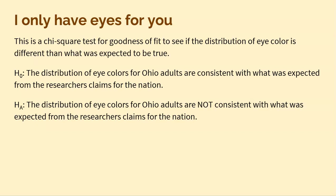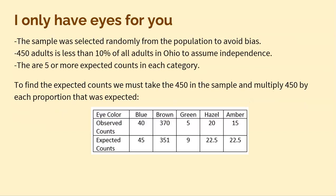If you know anything about the conditions: the first condition is that we have to have random samples to avoid bias. The second condition is, because we were randomly sampling, we need our sample to be under 10% of the population to assume independence. And the last is that we need to have five or more expected counts in each category.